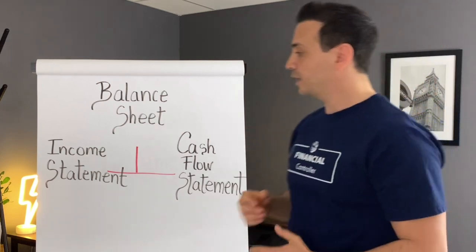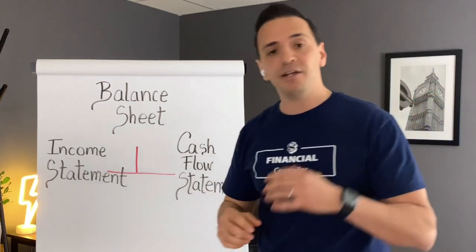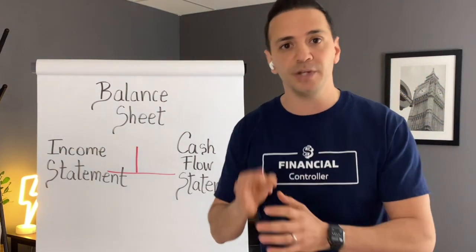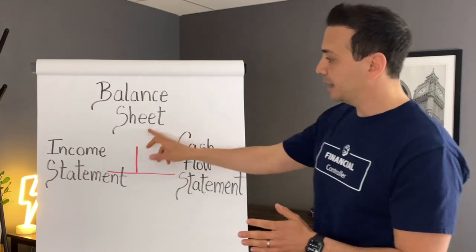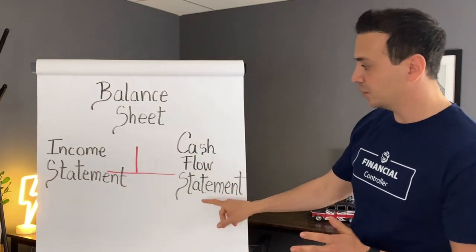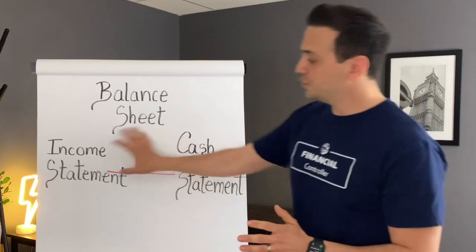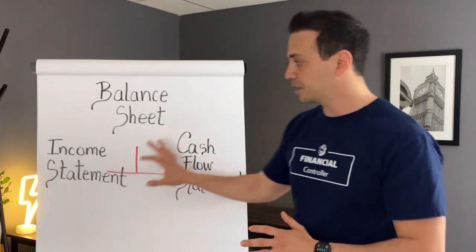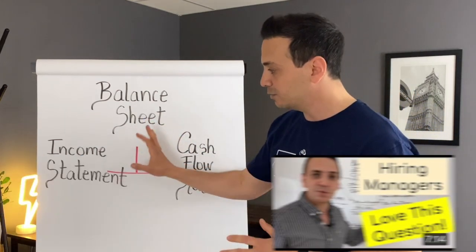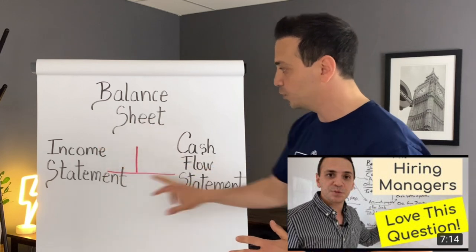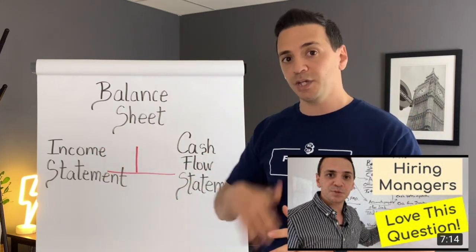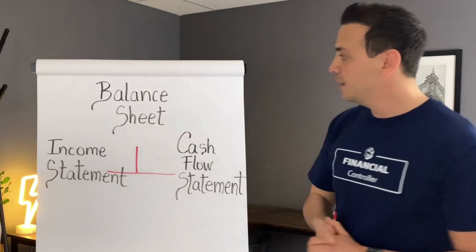When we provide management and investors at the end of the financial period, we provide them with three financial reports: the balance sheet, the income statement, and the statement of cash flow. These three statements are interconnected — there's a connection between all three. I have a video on how the data flows between the three statements; I'll leave a link in the description below. You can watch it after this video.